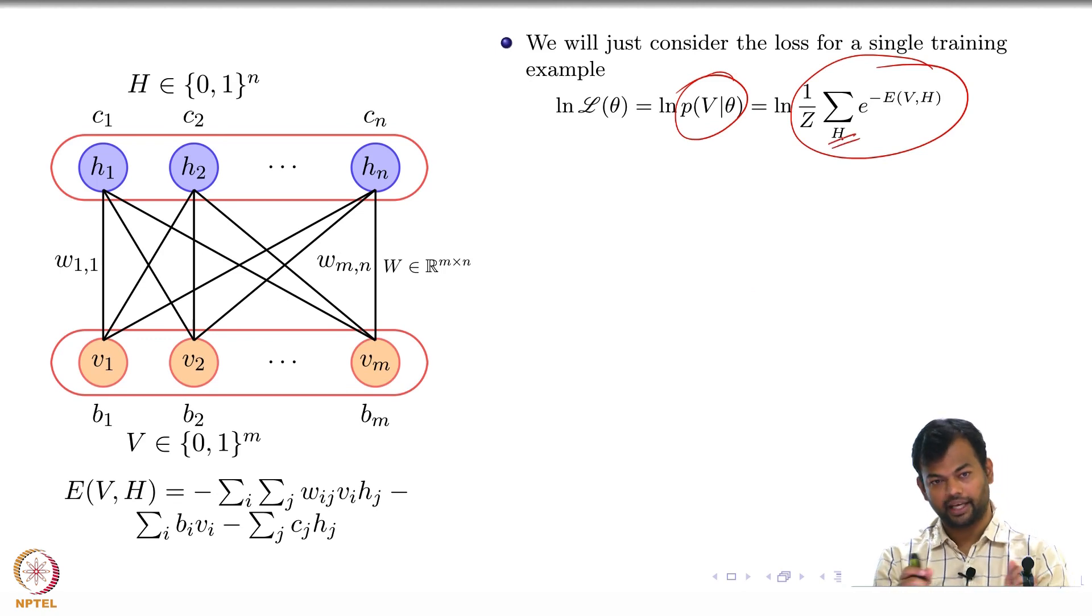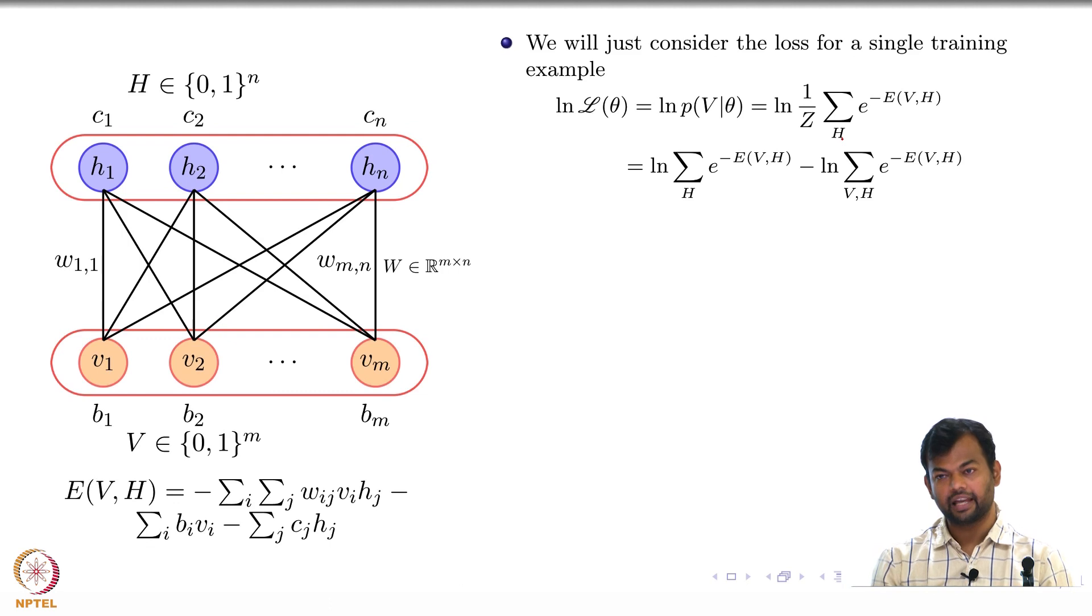So now let us tear this equation apart further and keep putting in more details. This is log of a by b, so I have written it as log of a minus log of b, where the b part I am writing as now that summation over v comma h. So how many terms are there in the summation? All possible configurations of v comma h. How many terms? 2 power m plus n. How many terms are there in the first summation? 2 power n.